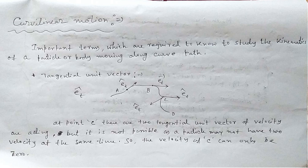For straight-line motion, we need only a single vector to describe the acceleration as well as the velocity. But when a particle follows a curved path, it will have two components of acceleration: one tangential and another radial. To study the kinematics of a body moving along a curved path, we need to know some terms.